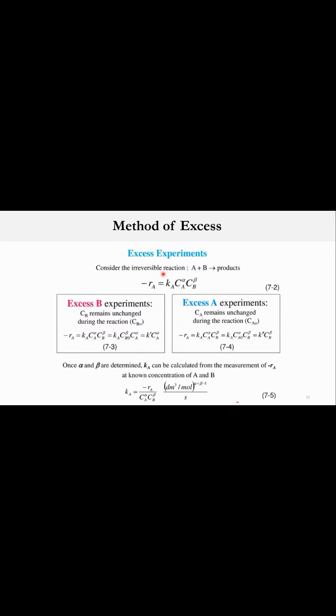Let's assume an irreversible reaction where A plus B goes to products. The rate of reaction or kinetic equation can be written as minus R of A equals K_A times C_A raised to power alpha times C_B raised to power beta, where alpha and beta are the respective orders for these species and alpha plus beta gives the overall order of the reaction.